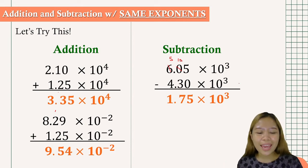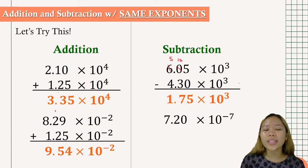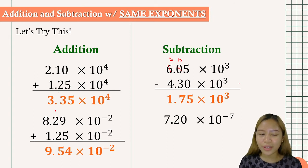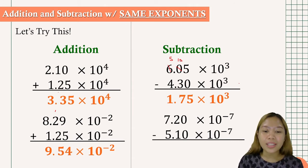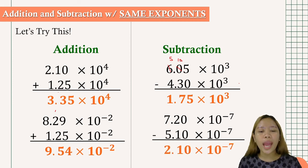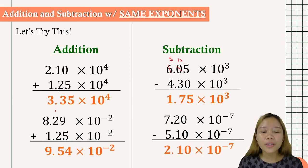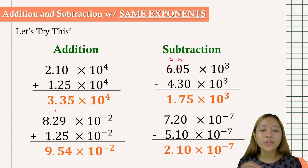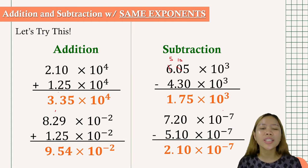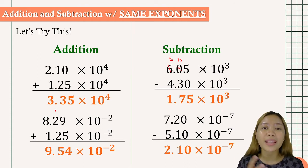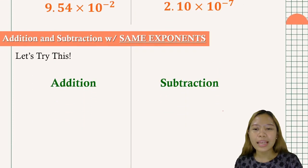Another example: 7.20 times 10 to the negative 7 minus 5.10 times 10 to the negative 7. Simply subtract to get a coefficient of 2.10, multiplied by 10 to the negative 7. If you have the same power of 10 in each scientific notation, just simply bring down the power of 10. Let's have another example.